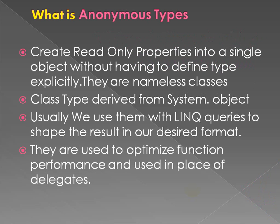An anonymous type lets you create read-only properties into a single object without having to define a type explicitly. They are nameless classes — you create a particular anonymous type which does not have any name. This type is created in the intermediate language and generated by the C# compiler, so it is nameless.